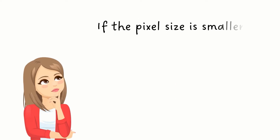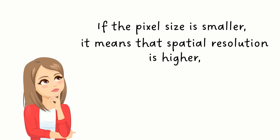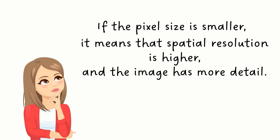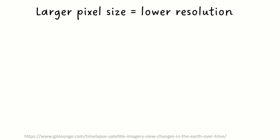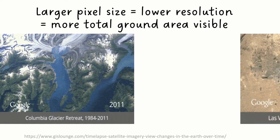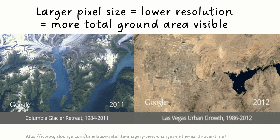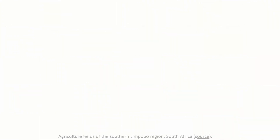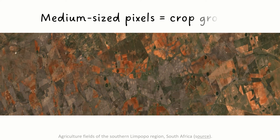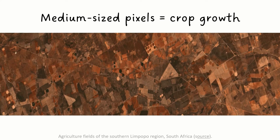If the pixel size is smaller, it means that spatial resolution is higher and the image has more detail. But we don't always need to see more detail. If the pixel size is larger and the spatial resolution lower, it means that more total ground area can be seen in an image — this works well for monitoring glaciers and expanding cities. Medium-sized pixels, on the other hand, provide enough detail for monitoring crop growth.